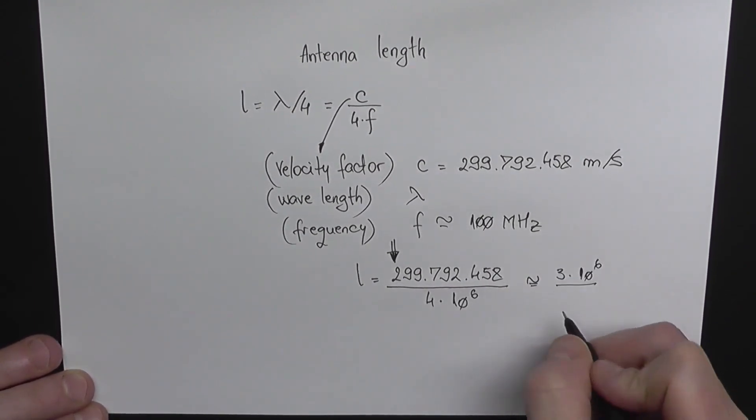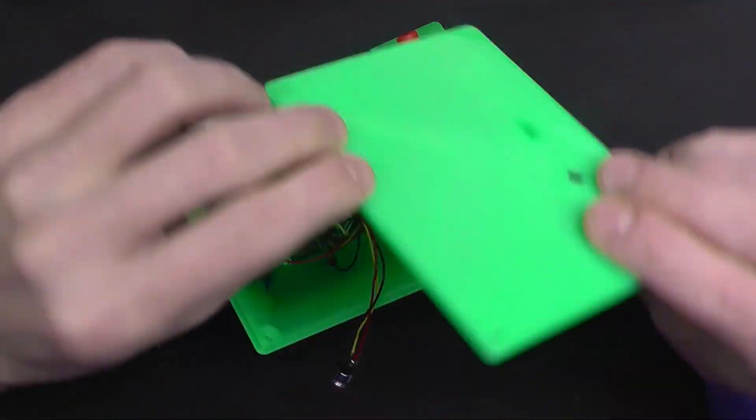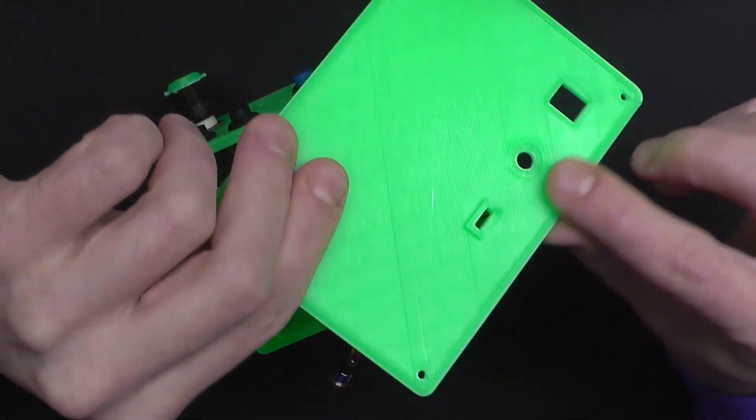So our length should be 3 divided by 4 which equals 75 centimeters. So now we're ready to put the back cover on, but before I do this we're going to place all these three connectors.